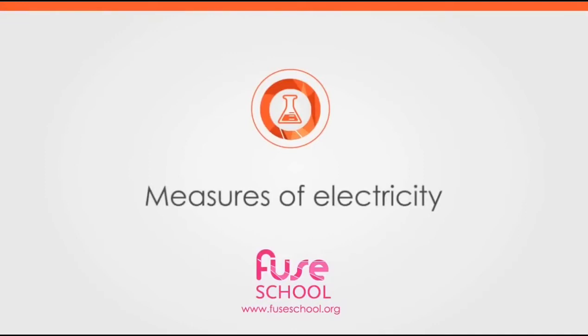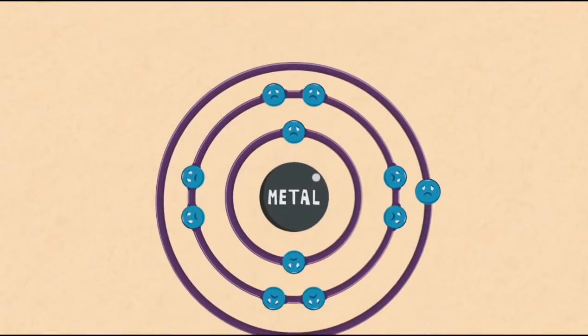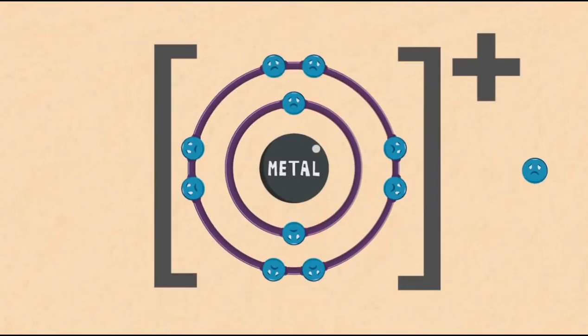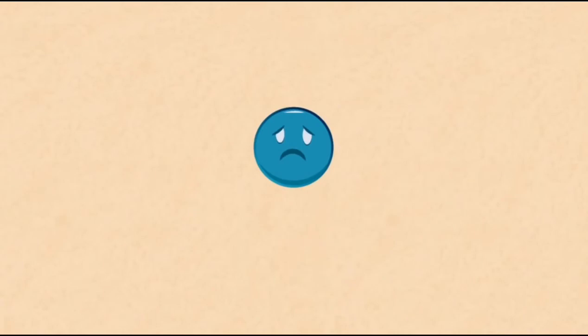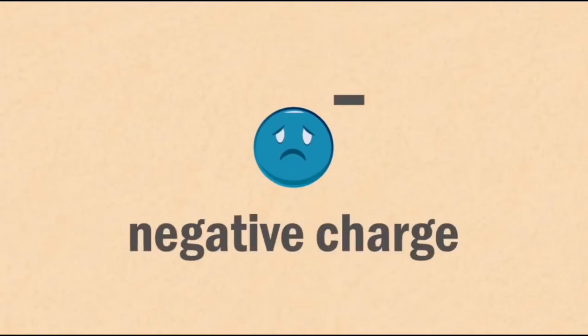In this video, we are going to learn about measures of electricity by considering an electrochemical cell. When metals form ions, they give away one or more electrons. Can you remember the charge on an electron? Pause the video and continue when you are ready. The correct answer is that electrons have a negative charge.